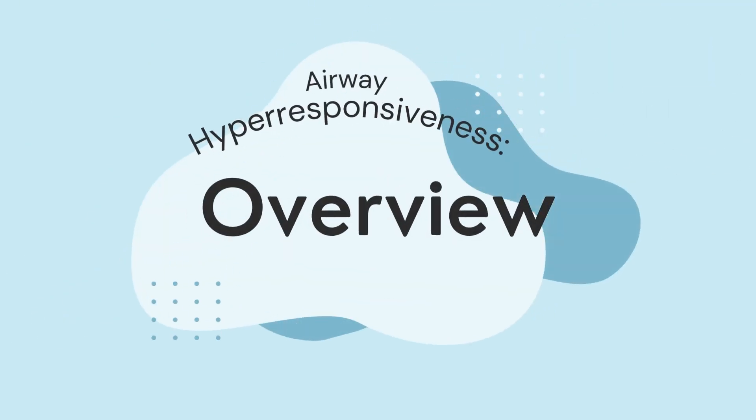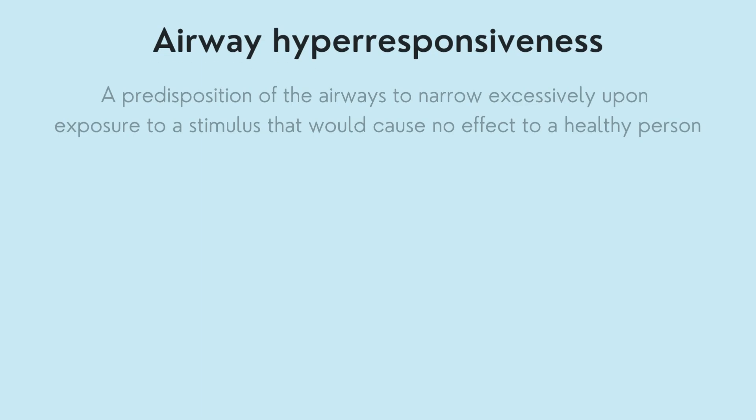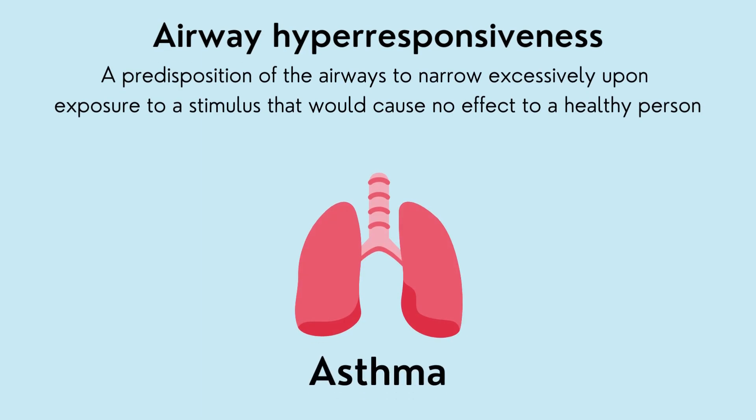Airway hyper-responsiveness, known as AHR for short, is a characteristic feature of asthma, describing a predisposition of the airways to narrow excessively when exposed to a stimulus that would cause no effect in a healthy individual.